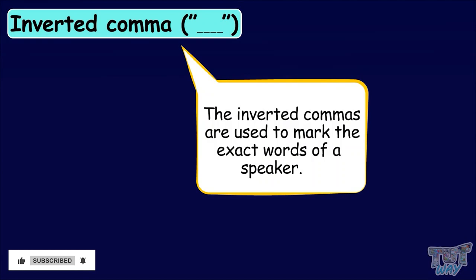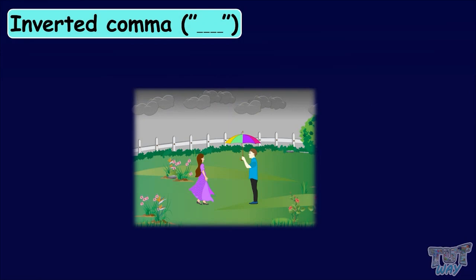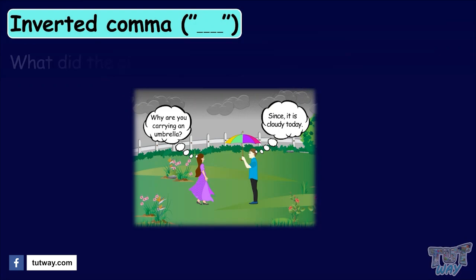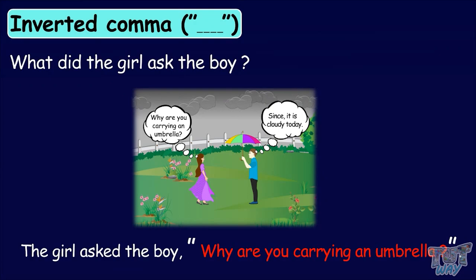We see a boy and a girl in a garden. The boy is carrying an umbrella. So the girl says, Why are you carrying an umbrella? Since it's cloudy today. What did the girl ask the boy? The girl asked the boy, Why are you carrying an umbrella? These are the exact words spoken by the girl, so we have put these words in inverted commas.